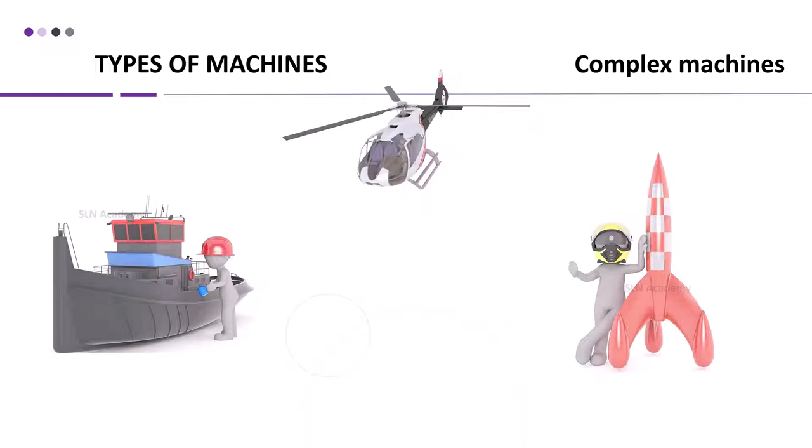Complex Machines. Machines which have many parts and a complex structure are called complex machines. Complex Machines are made up of many simple machines. Examples: Ship, Helicopter, Rocket, Laptop, Computer, etc.